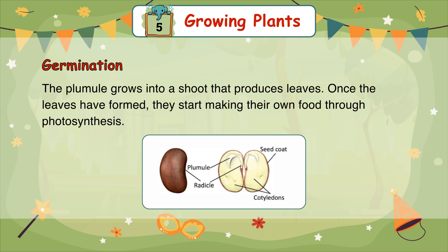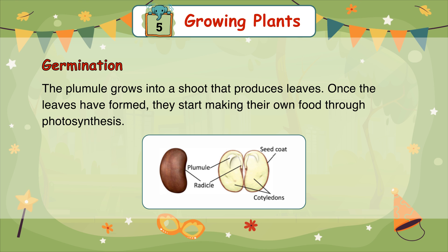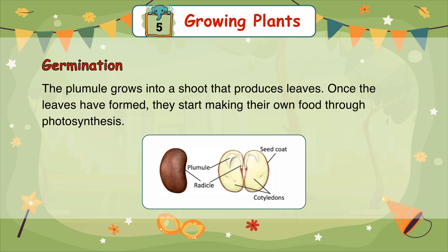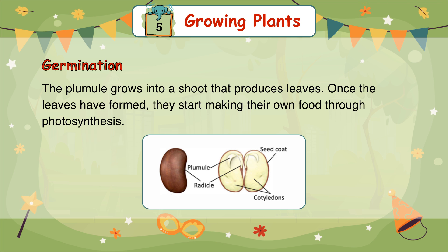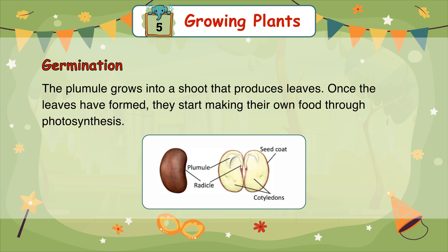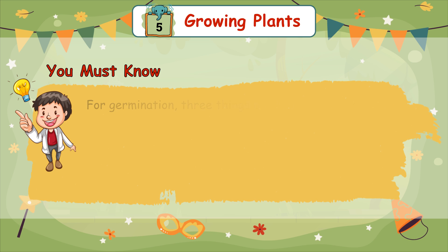The plumule grows into a shoot that produces leaves. Once the leaves have formed, they start making their own food through photosynthesis.